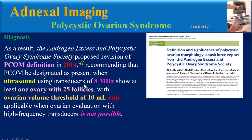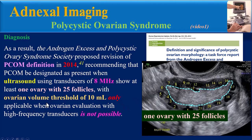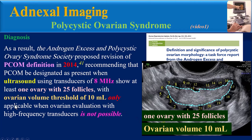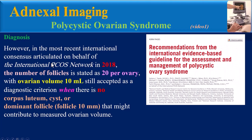The 2014 revision recommended that PCO morphology be designated as present when ultrasound using transducers of 8 MHz or higher shows at least one ovary with 25 follicles, and ovarian volume greater than 10 milliliters — applicable only when ovarian evaluation with a high-frequency transducer is not possible.